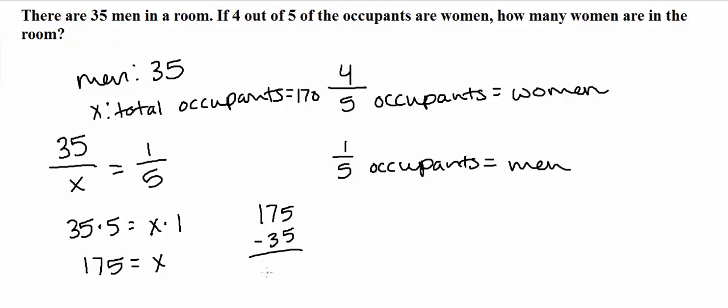And then subtracting here, we get 140. So that means there are 140 women in the room. So this problem really dealt with ratios.